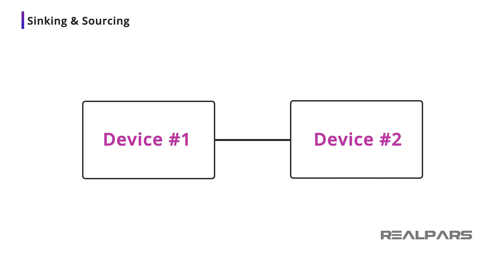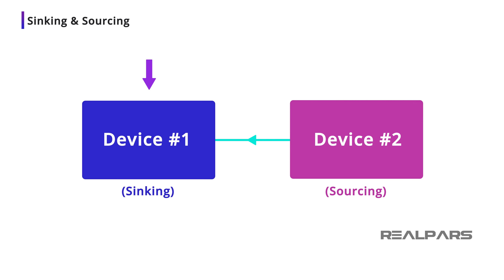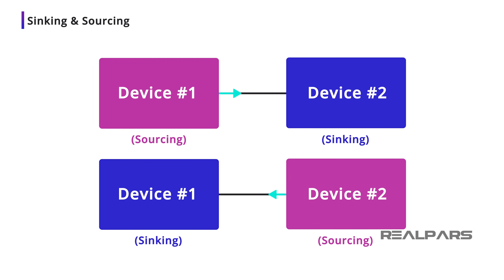What if the current was flowing from device number 2 to device number 1? In this case, we say device number 2 is sourcing the current, and device number 1 is sinking the current. In every situation where you have a current flow between two devices, one of the devices will be sourcing, and the other will be sinking.